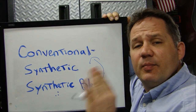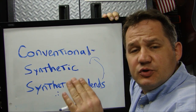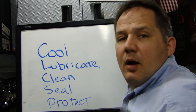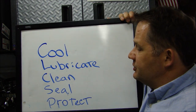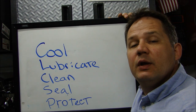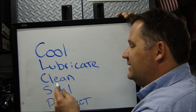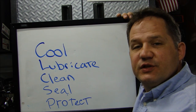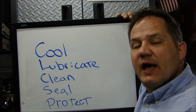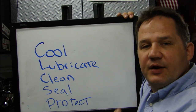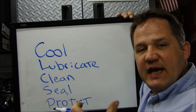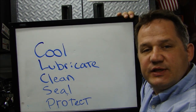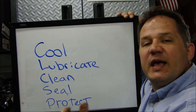Now let's talk about the purpose of motor oil — the five main functions of oil in your engine. They are: cool, lubricate, clean, seal, and protect. For cooling: oil is a viscous material that, as it travels through the cylinder heads and block, collects heat and retains it, then drops into the oil pan and cools down. Air blowing across the oil pan cools it further, helping draw heat away from the engine.